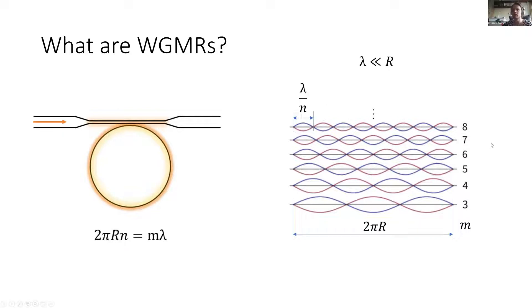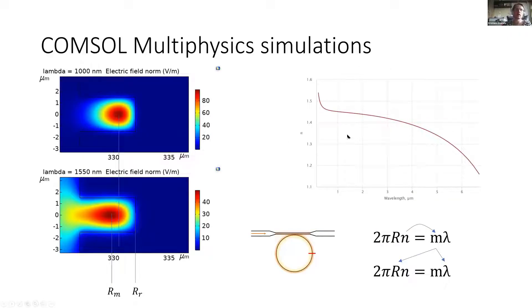This is only a schematic because the wavelengths are much smaller than the radius, so the m, the azimuthal mode number that describes how many waves are inside, will be much larger than three. It will be several hundred or thousands. We can make COMSOL simulations of these resonators.